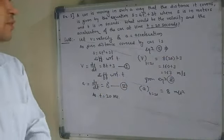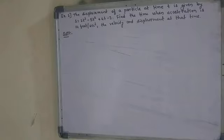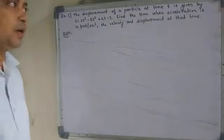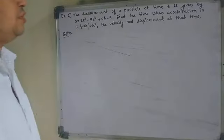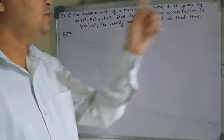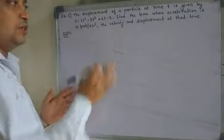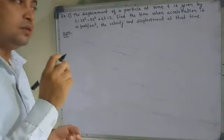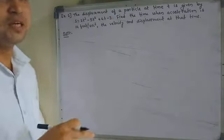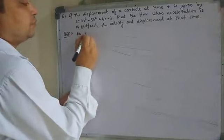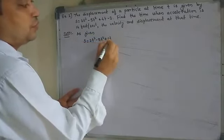The second example: the displacement of a particle at time t is given by s = 2t³ − 5t² + 4t − 3. We need to find the time when the acceleration is 14 feet per second squared, and then find the velocity and displacement at that time.